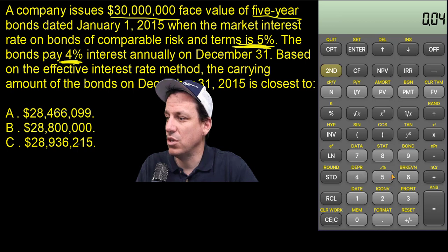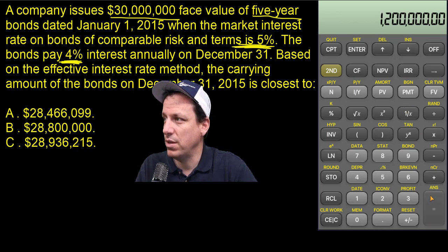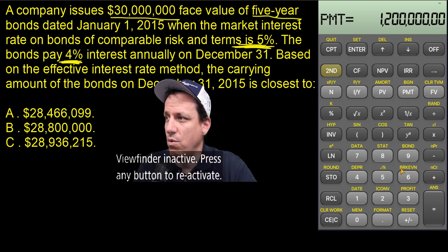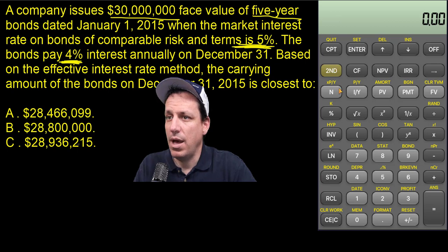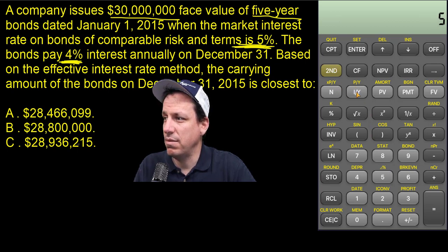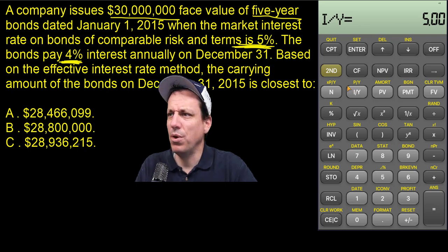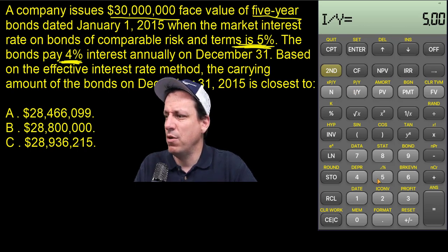It is the coupon payment that we put in there. The coupon payment of $1,200,000 is the payment per period — that was 4% times the $30 million. And the interest rate per year required by the market is 5%. These are five-year bonds, so N equals 5.